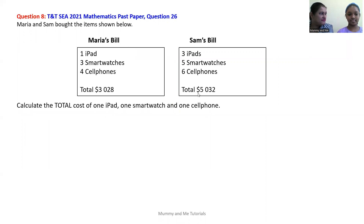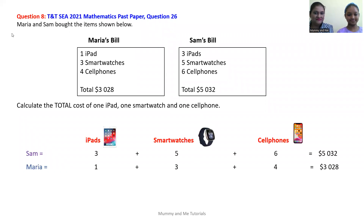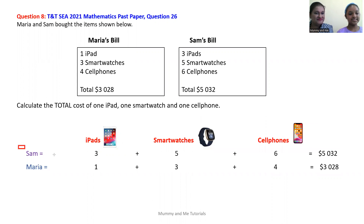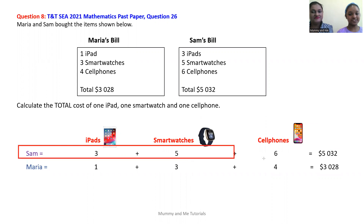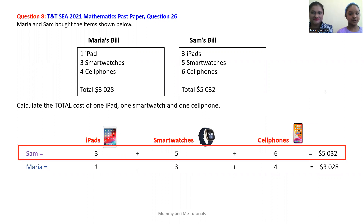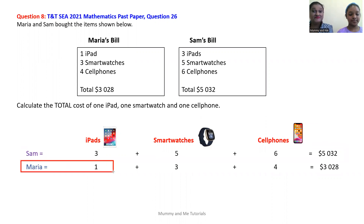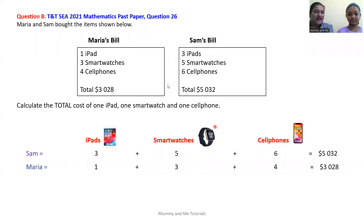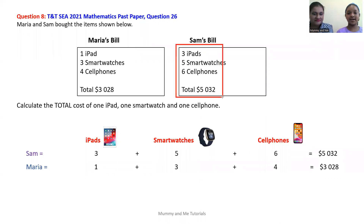Is there a better way to lay out this information? Yes. So this is how we're laying out our information below, with quantities for iPads, smartwatches, and cell phones. Sam purchased three iPads, five smartwatches, and six cell phones for $5,032. Maria purchased one iPad, three smartwatches, and four cell phones for $3,028. Sam's information is in the first line because Sam purchased the greater number of iPads, smartwatches, and cell phones, so Sam's total was greater than Maria's total.